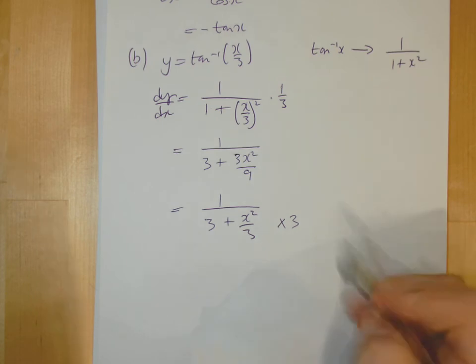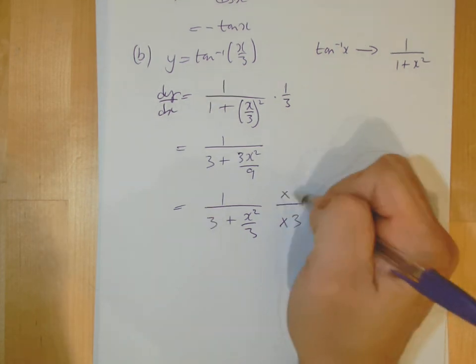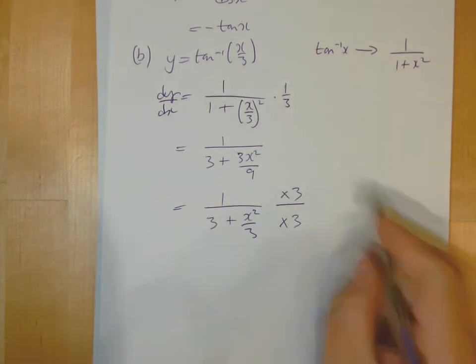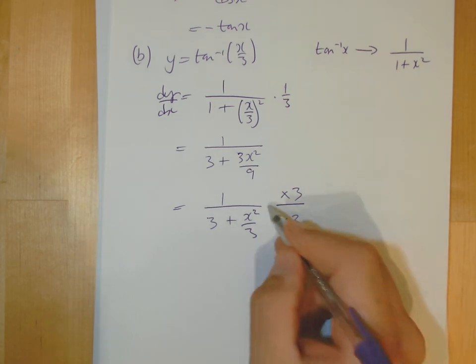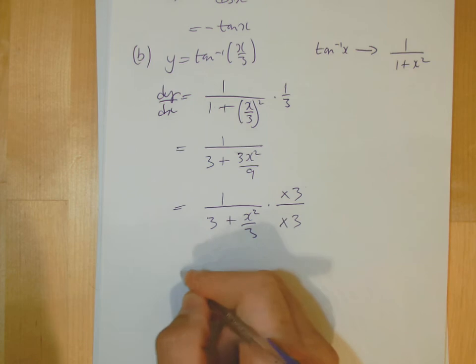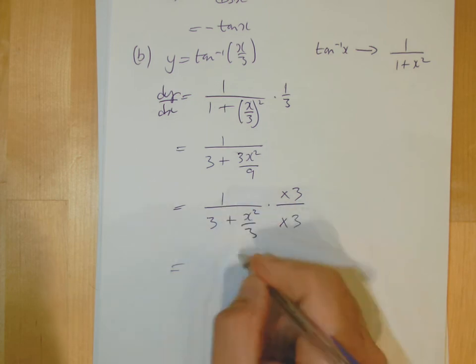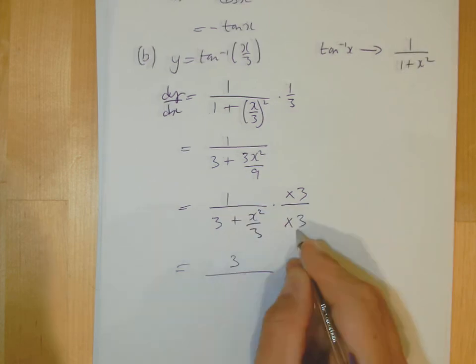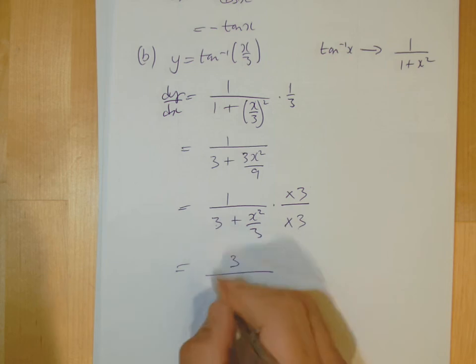And I can do that because what I'll do is to counterbalance it, I'll times the top by 3 as well. So I'm not doing anything wrong. What I'll do to the top, I'm doing to the bottom. It's just finding a better fraction. So times the top by 3, 1 times 3 is 3, times the bottom by 3, and you've got 9 there.